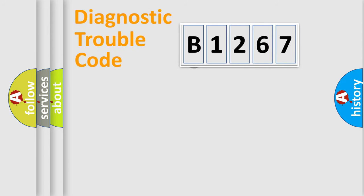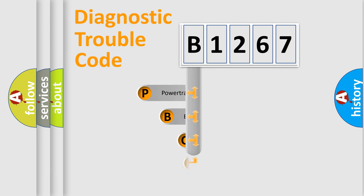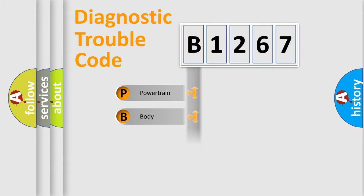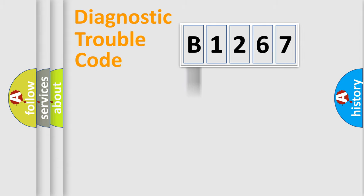Let's look at the history of diagnostic fault code composition according to the OBD2 protocol, which is unified for all automakers since 2000. We divide the electric system of an automobile into four basic units: Powertrain, Body, Chassis, and Network.